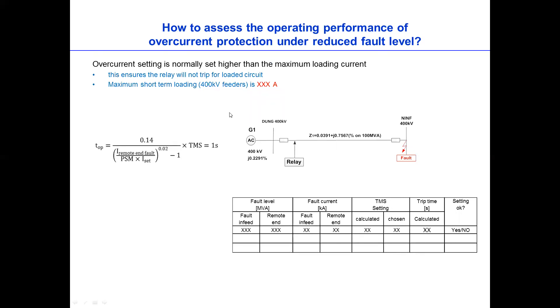So the conventional distribution setting is okay because we used to have strong inertia or high fault current contribution from coal-fired power station or strong generators. But now the problem is how do we achieve when the fault level is reduced? So for example, normally we set overcurrent protection higher than the maximum loading current because this will ensure the relay will not trip for loaded circuit.